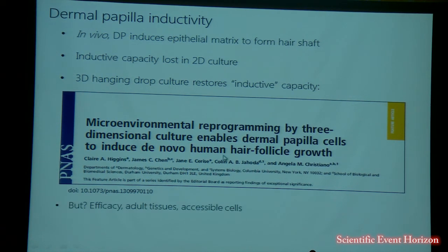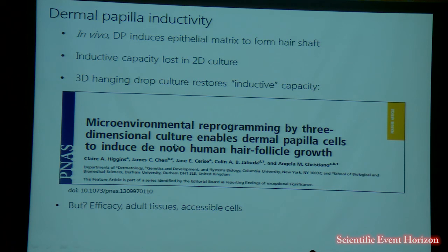Some of the things that we've identified that we could improve on in this technique are improving the efficacy, using purely adult human tissues, and also trying to use more accessible cell populations — so using dermal fibroblasts instead of dermal papilla and seeing if we can transition these dermal fibroblasts and give them a dermal papilla character.